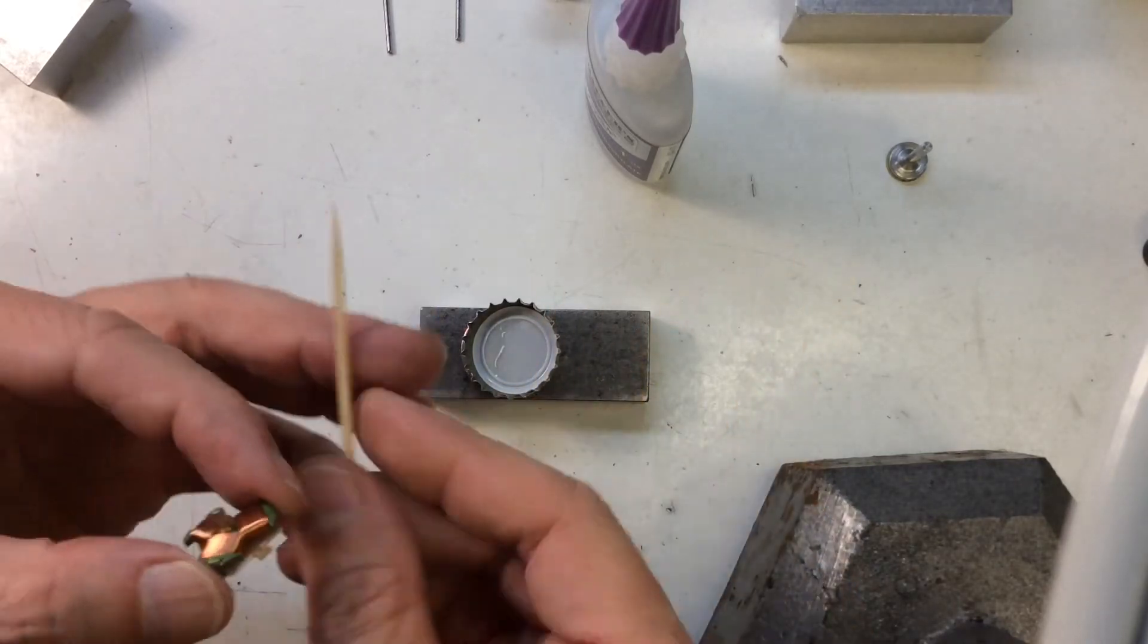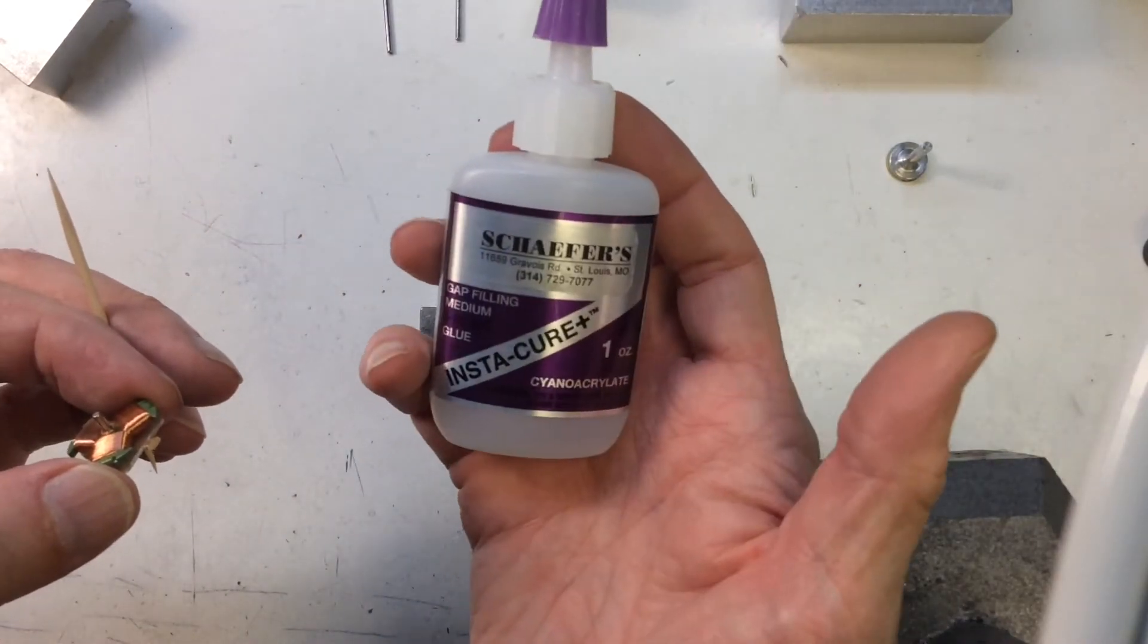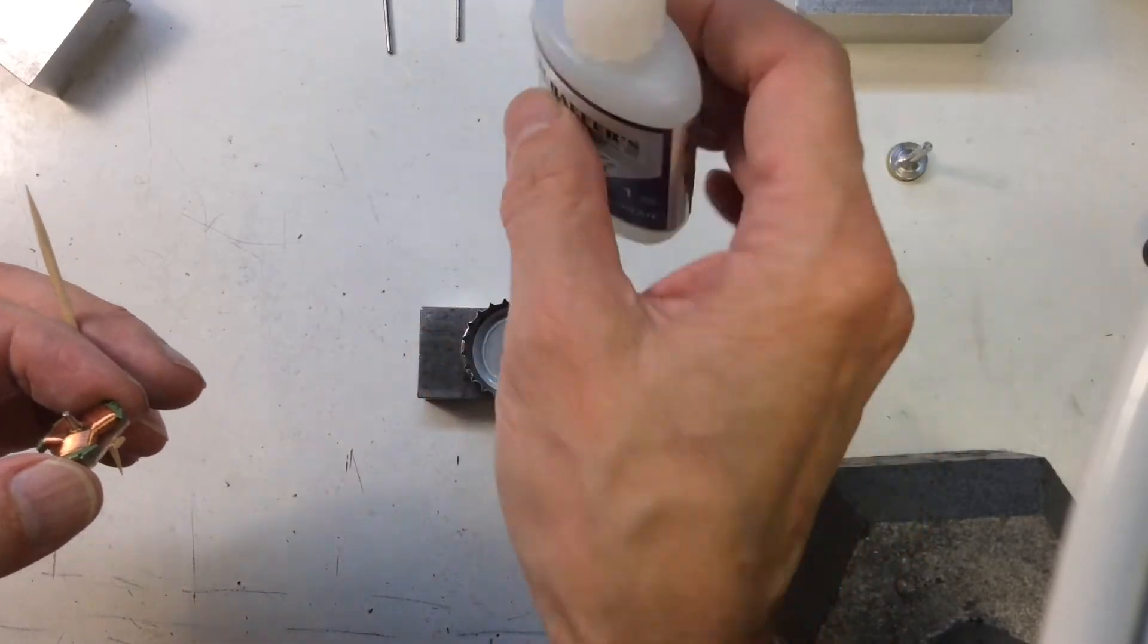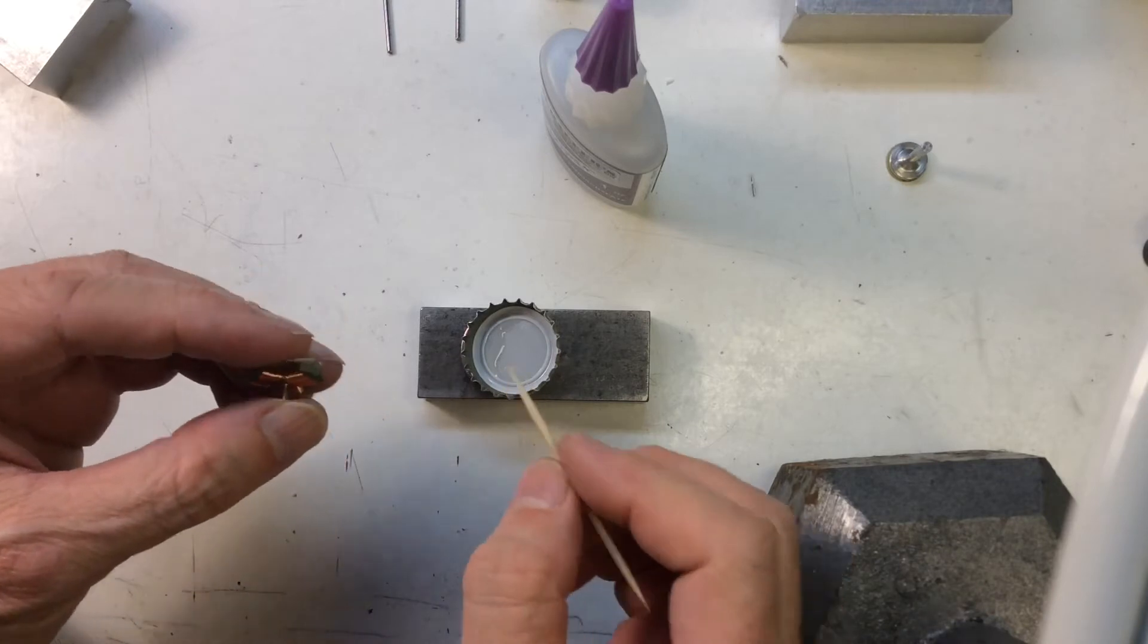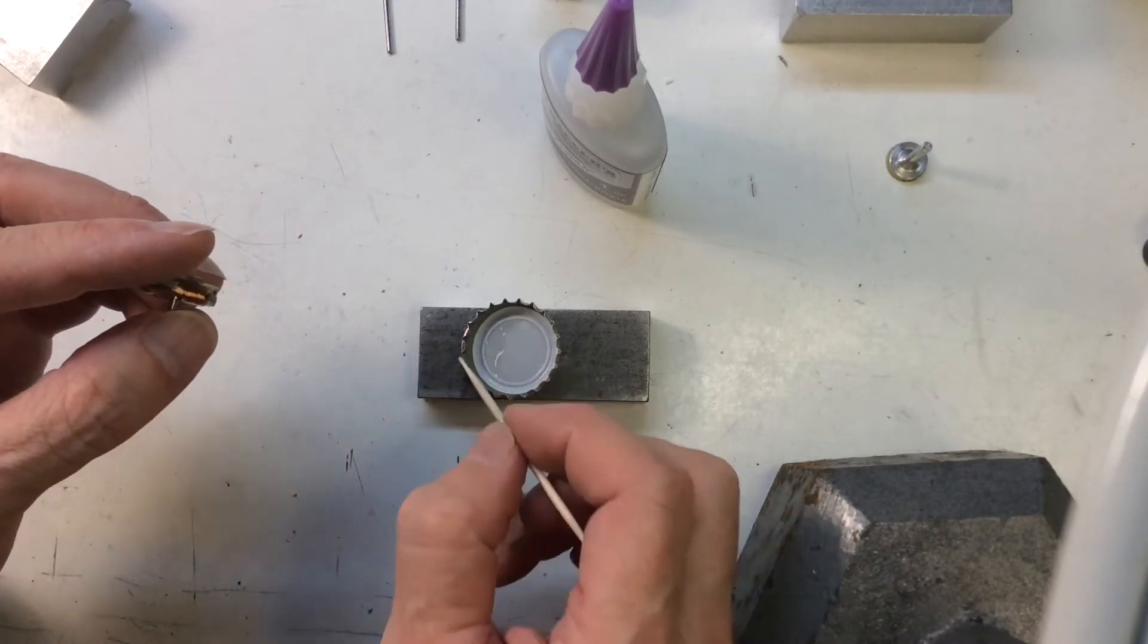What I got here is a toothpick, a little rusty toothpick. You've got the same old glue you had before, this medium superglue. I poured a little bit into this bottle cap here, and what I'm going to do is just spread this around on the armature windings.